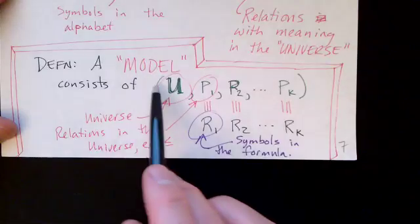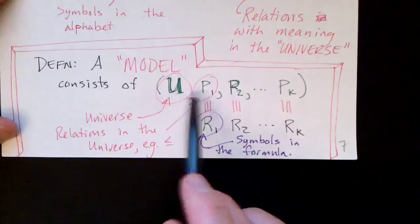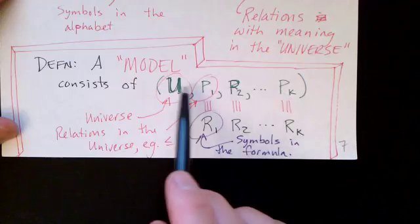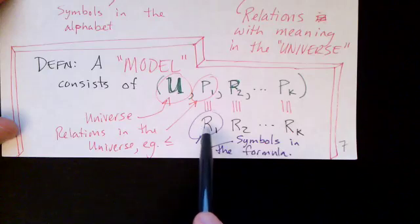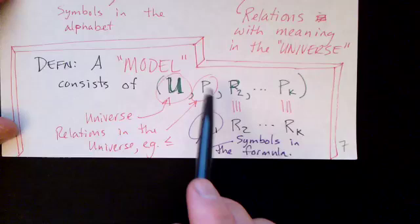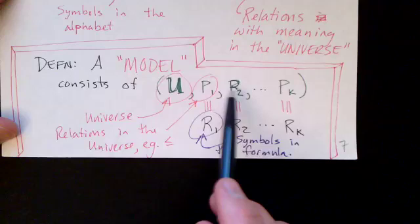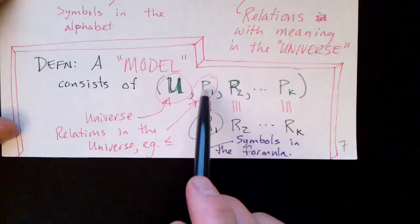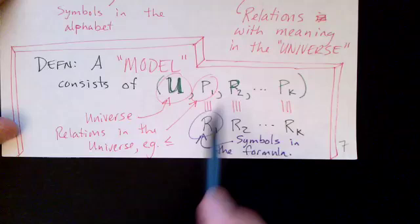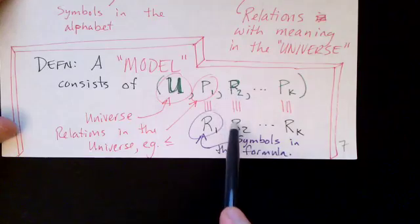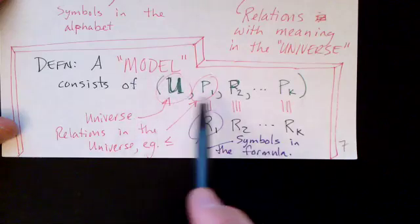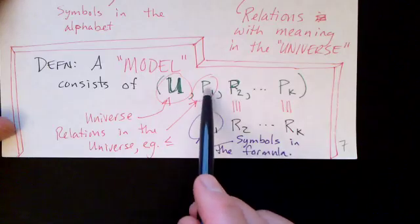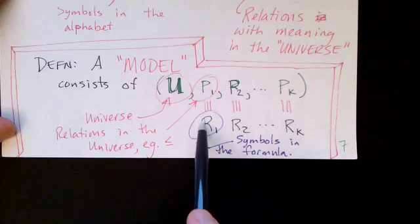A model consists of a universe and a connection between the relation symbols in the formula and relations in the universe. If our relation symbols are R1, R2, R3, and so on, we specify corresponding relations in the universe — P1 might be plus, P2 might be less than or equal, and so on — with the assumption that P1 corresponds to R1, P2 to R2, etc. So a model is a universe of objects and meanings for each of the symbols in the formula.